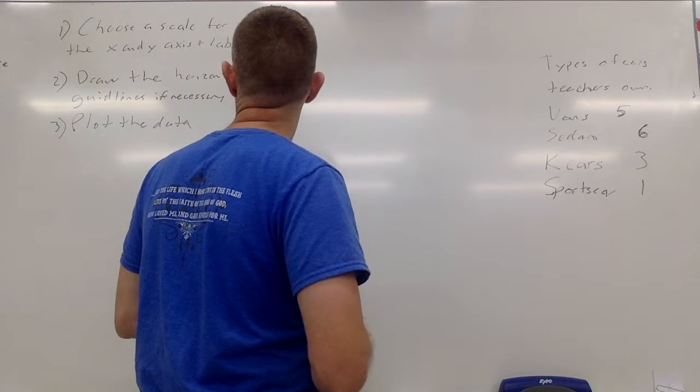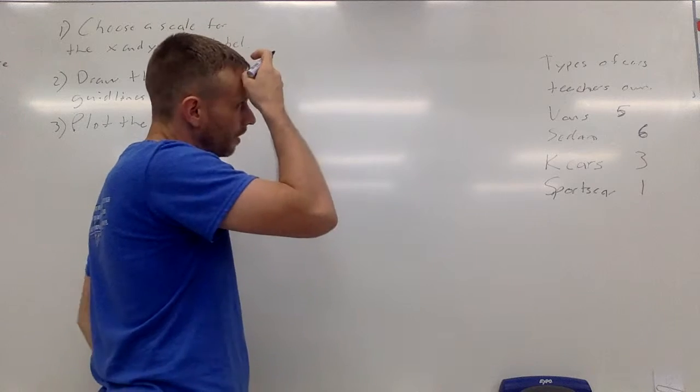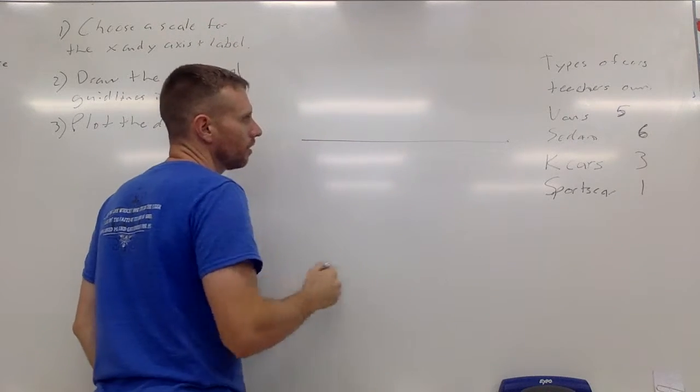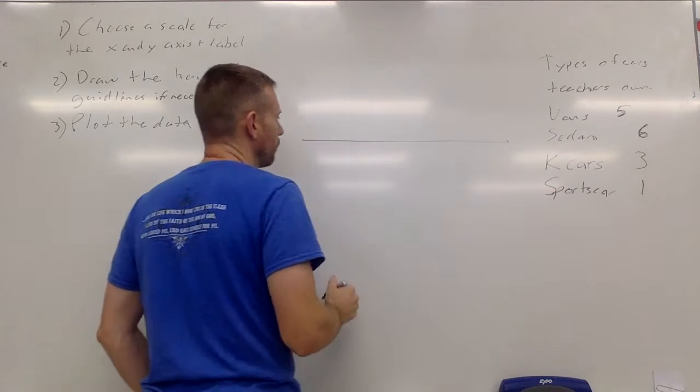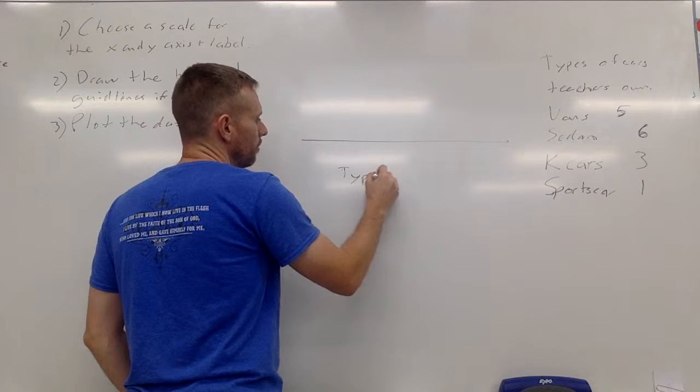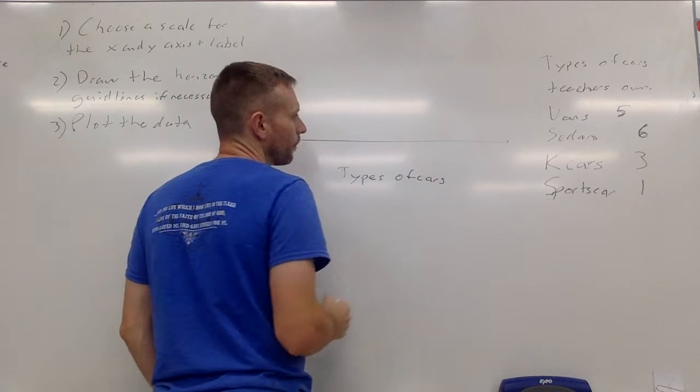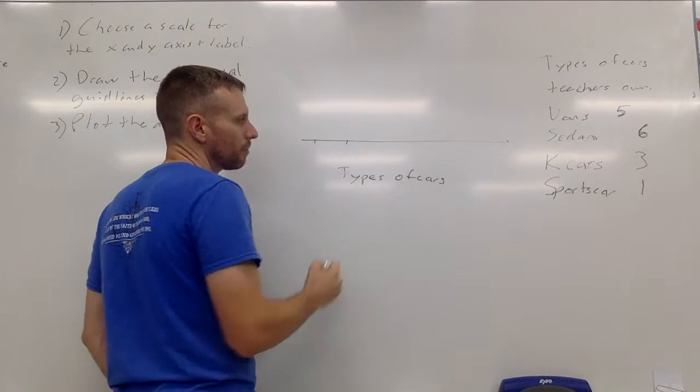The first thing you want to do is to scale the x and y axis. My x axis is going to be all of these types of cars, so I'm going to label it 'types of cars'. In a bar graph there is a space between the bars.